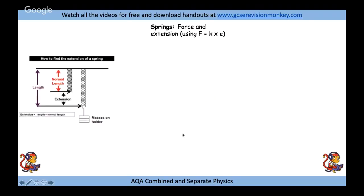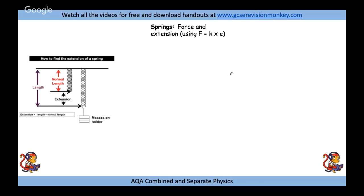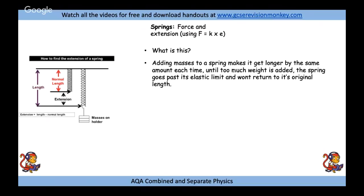The first required practical for Physics Paper 2 is the Hooke's Law practical, to do with springs — looking at adding forces to springs and examining their extension. This uses our equation F = kE. If I add masses to a spring it makes the spring get longer by the same amount each time, until too much weight is added and the spring goes past what we call its elastic limit — meaning it's overstretched and won't return to its original length.